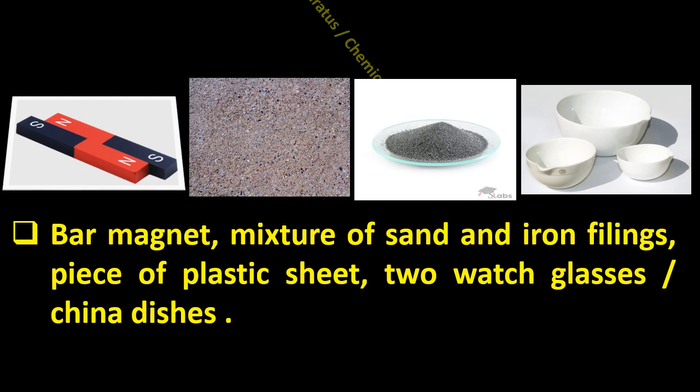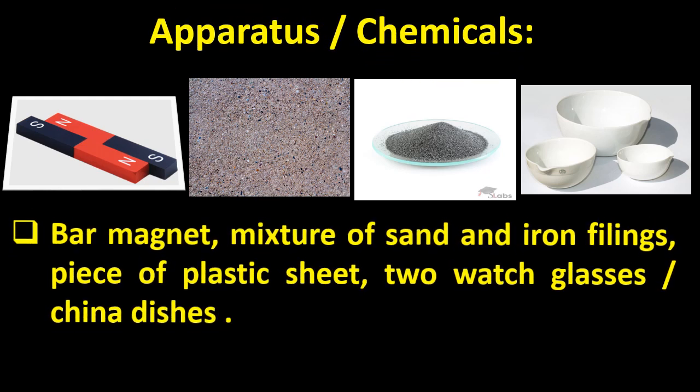First of all, what type of apparatus we require to carry out this practical. One is the bar magnet. Then we need two things which will be mixed together to make a mixture. In this practical, one is sand and the second thing is iron filings. Now what are the iron filings? Very small pieces of iron.